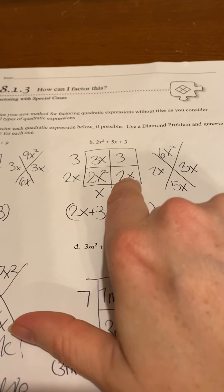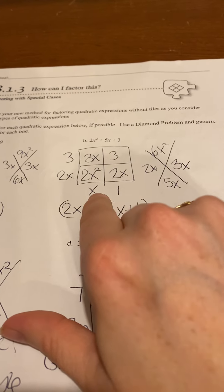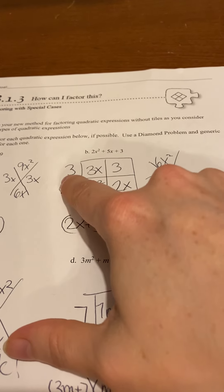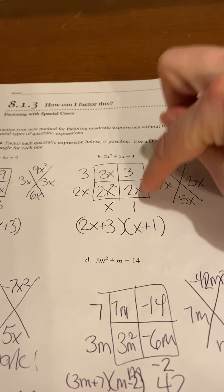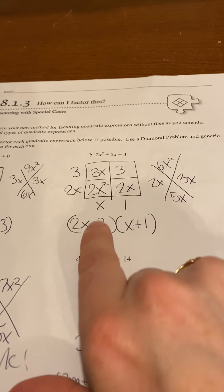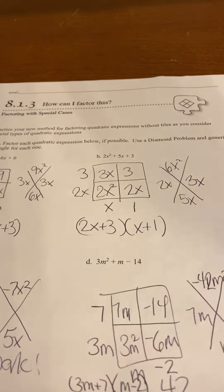2x times what would give you 2x? 1. x times what would give you 3x? 3. And then you can double check, 3 times 1 is 3. So you get 2x plus 3 times x plus 1.